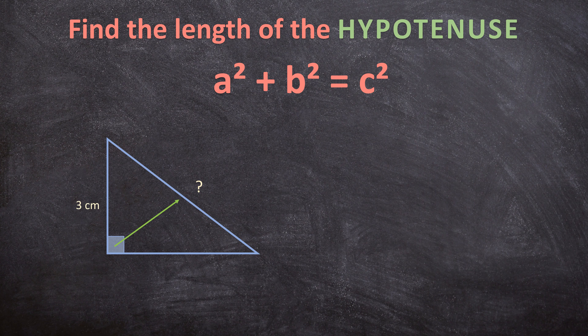To calculate the hypotenuse we need the measurements of the other two sides. This side is 3 centimeters and this side is 4 centimeters. Before we apply the formula, we need to name our sides A, B, and C, where C is always the hypotenuse.